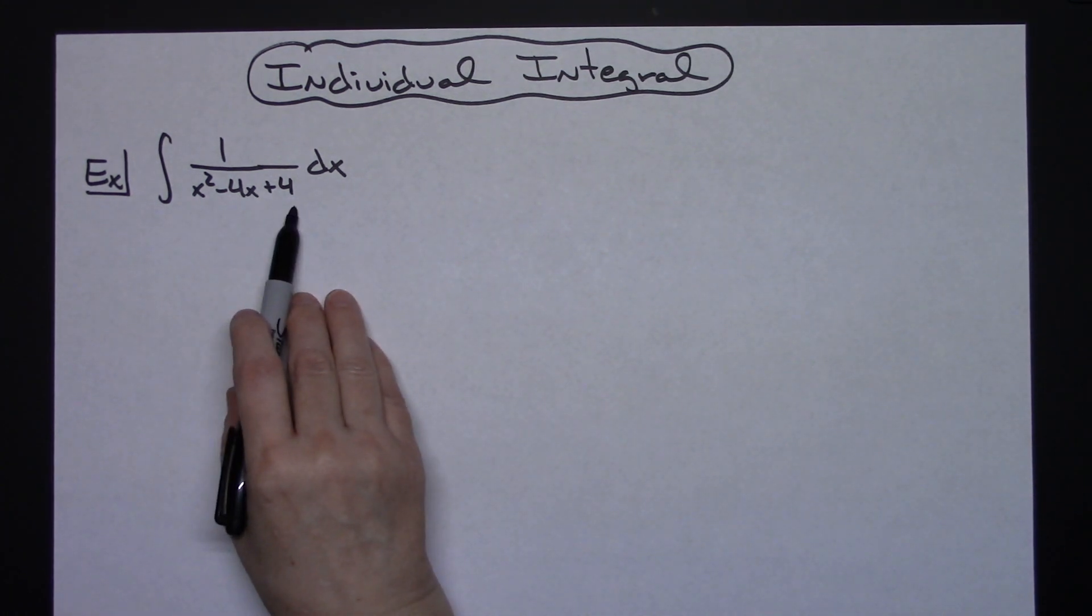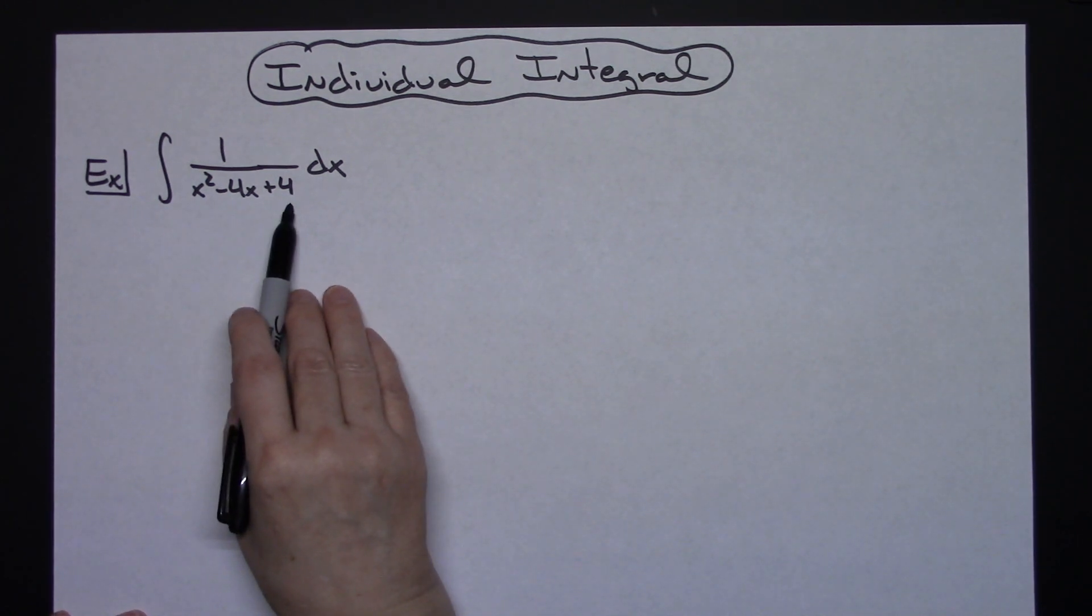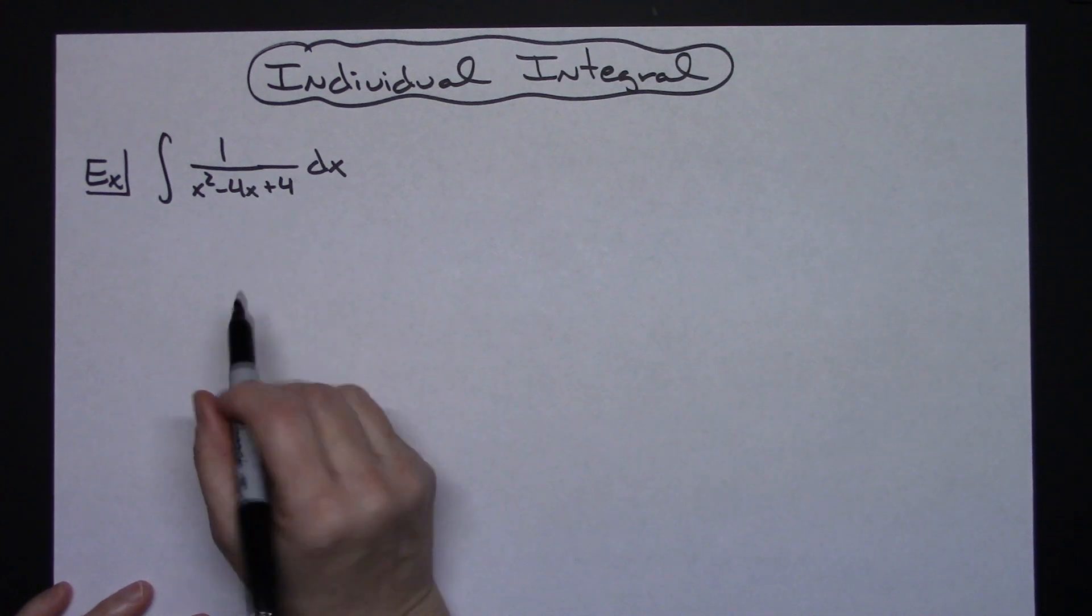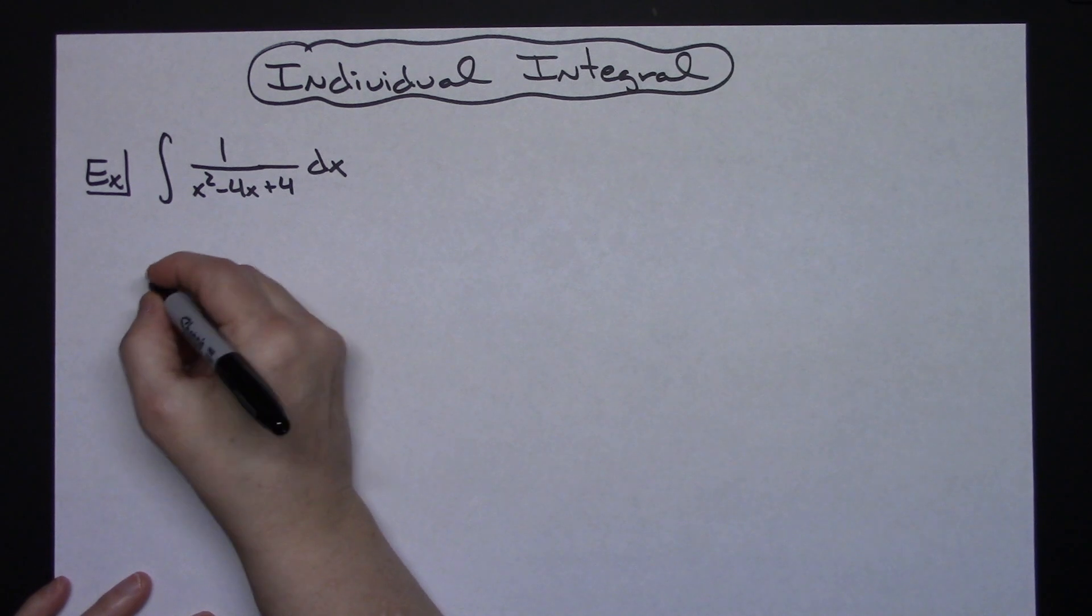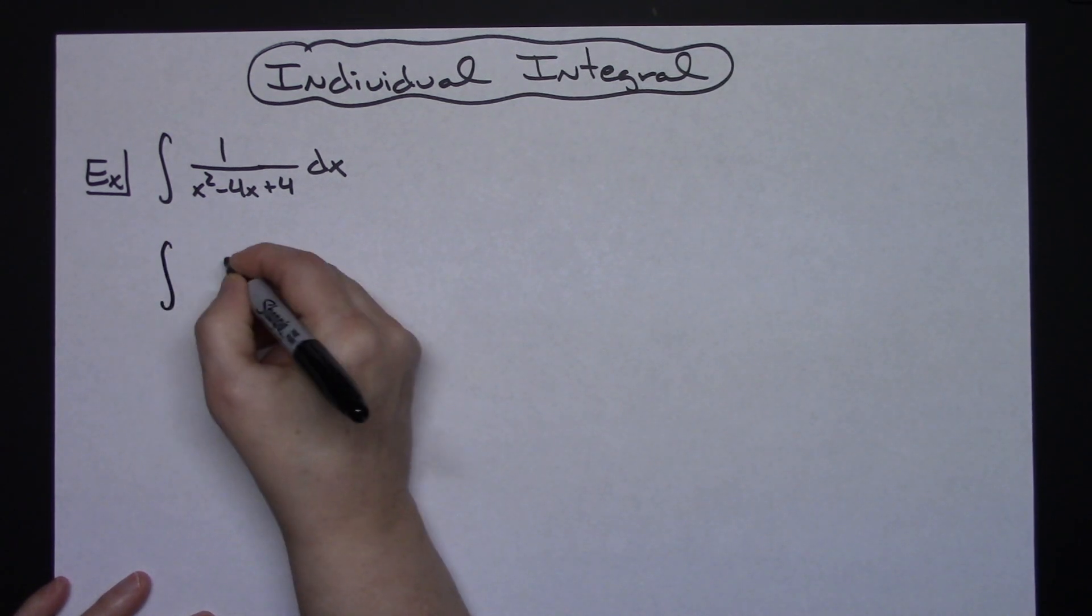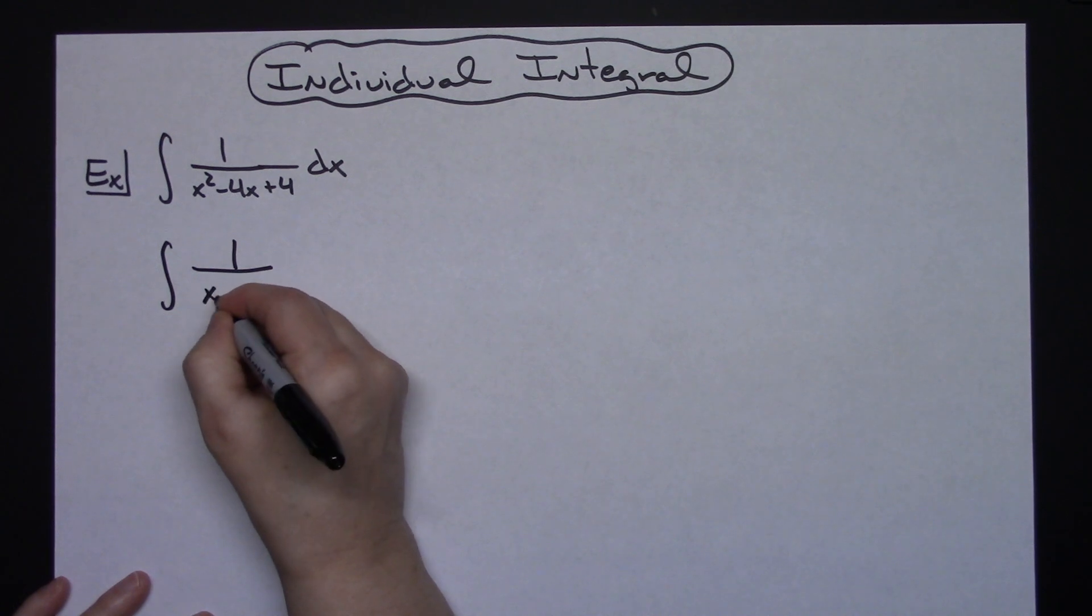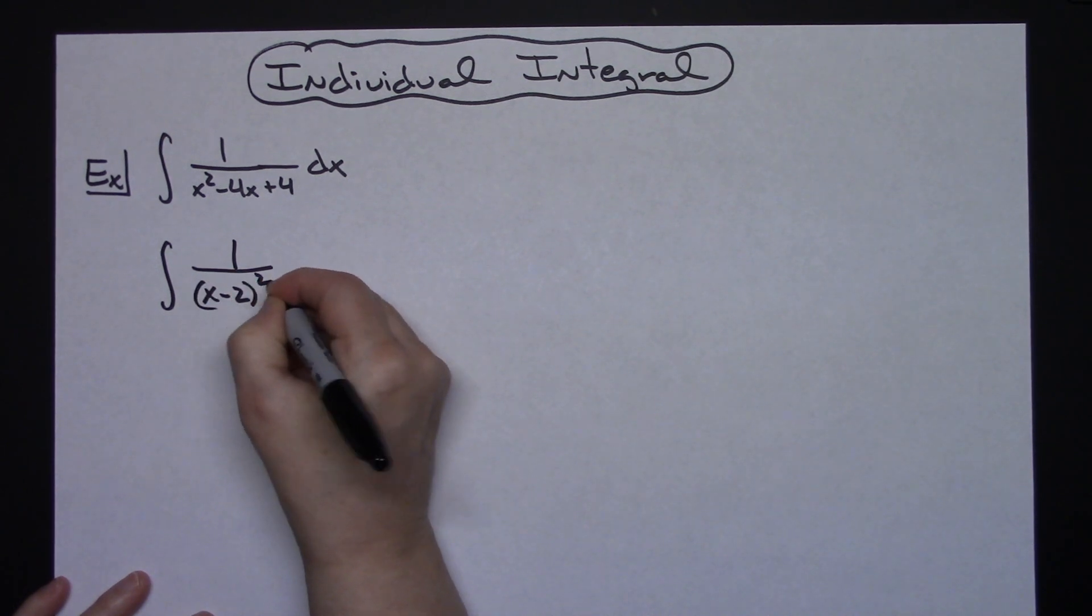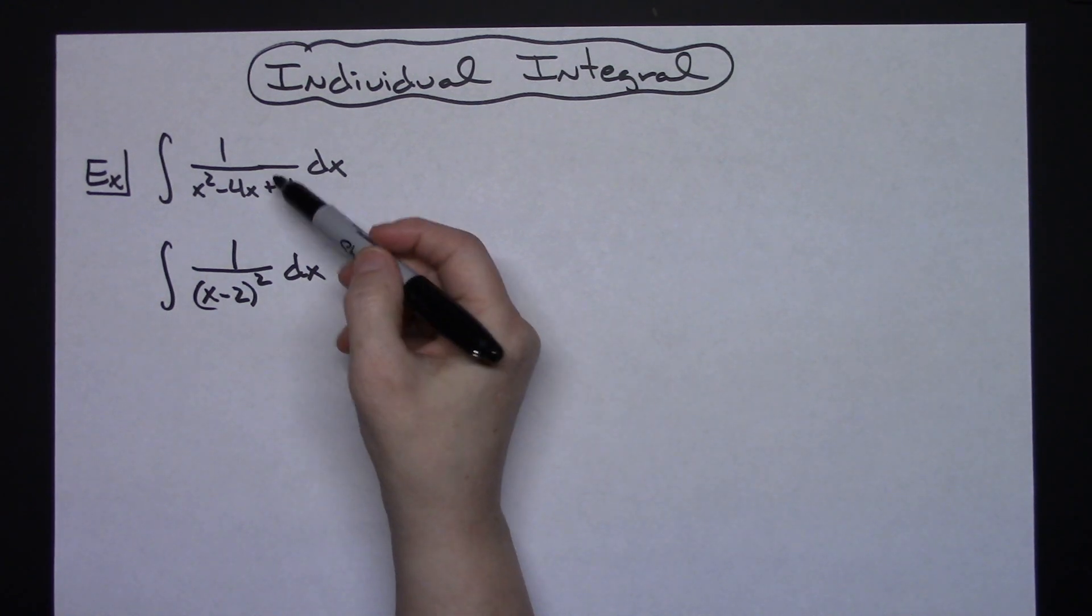The polynomial in the denominator should be recognizable as a perfect square trinomial that factors easily. Factoring with the perfect square trinomial formula gives me the integral of 1 over (x minus 2) squared dx. So I have to do some algebraic manipulation first before u-substitution comes into play.